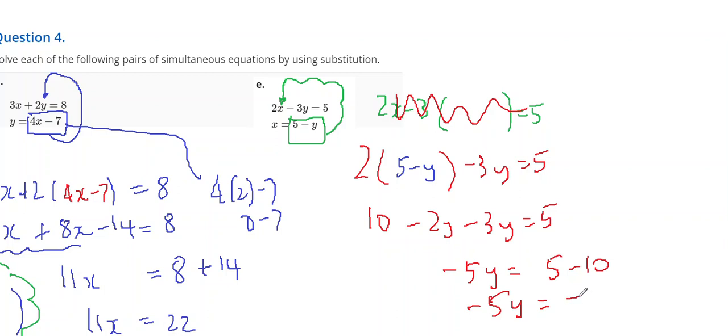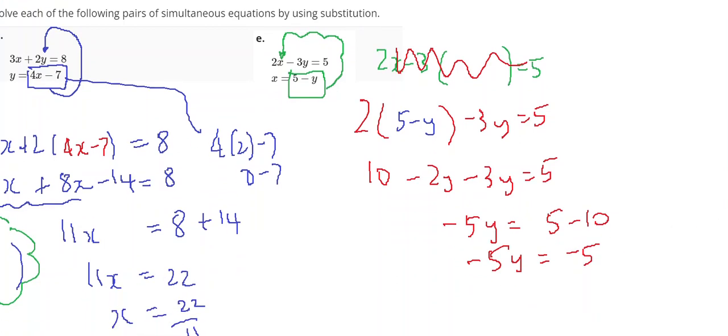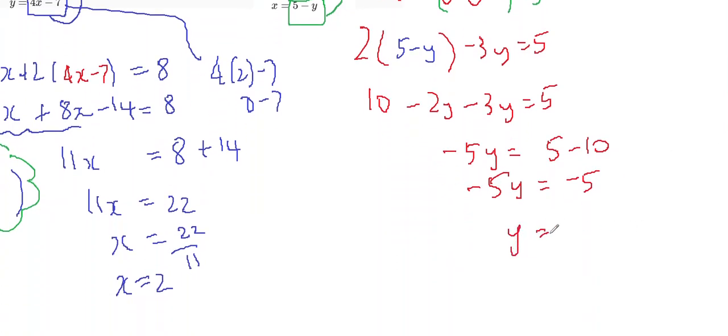Minus 5y equals minus 5. Divide both sides by minus 5. y equals 1.